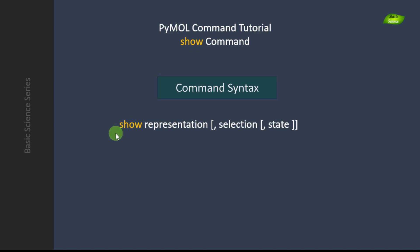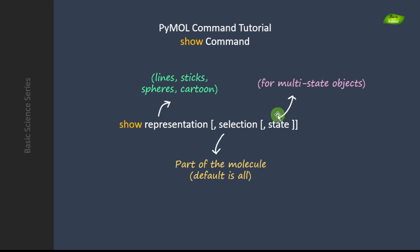Now let's move on to the syntax of this command. The syntax is: show, then representation, then selection, and then state. The representation part means you want to represent your protein in the form of lines, sticks, spheres, or cartoon. If you're already using PyMOL, you should have a good idea of what each of these representations looks like. You provide that information as these keywords.